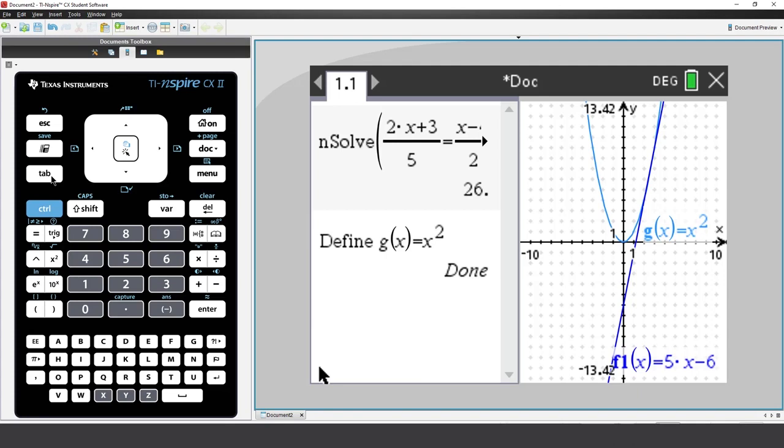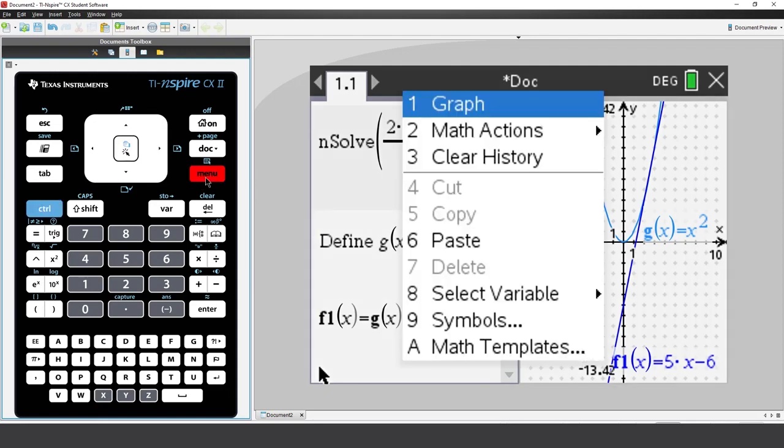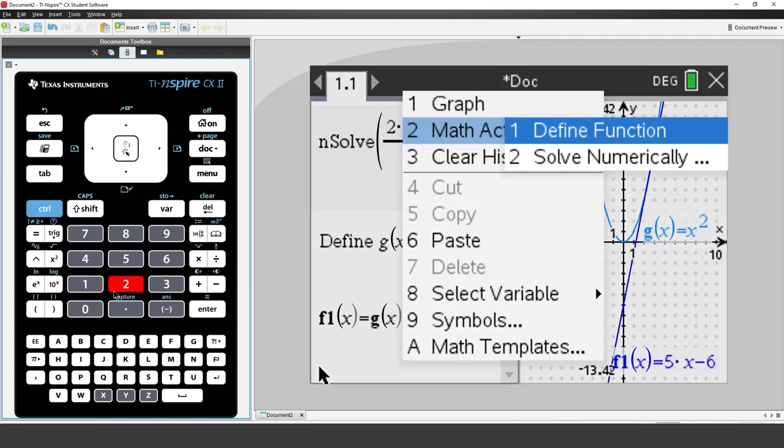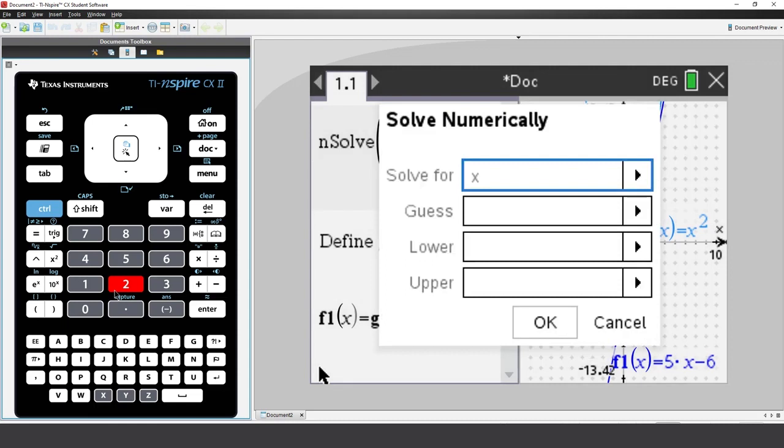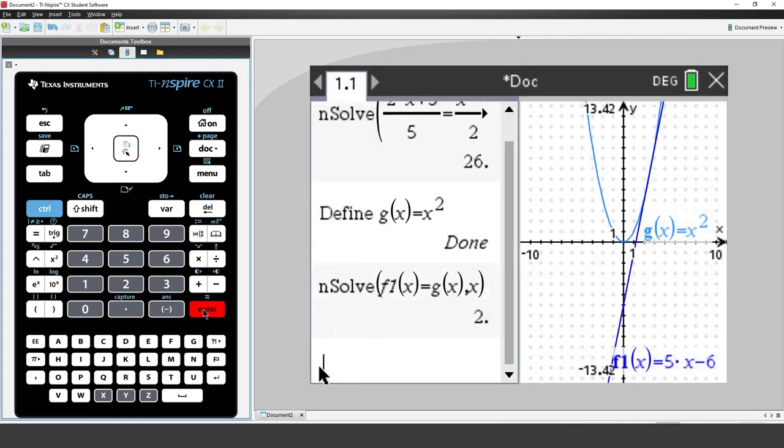If the graphs intersect, that means f of x equals g of x. Now, I can recall these using the Variable menu. Then right-click, select Math Actions, and then select Solve Numerically. So the graphs intersect when x equals 2, but the graphs appear to have two points of intersection.